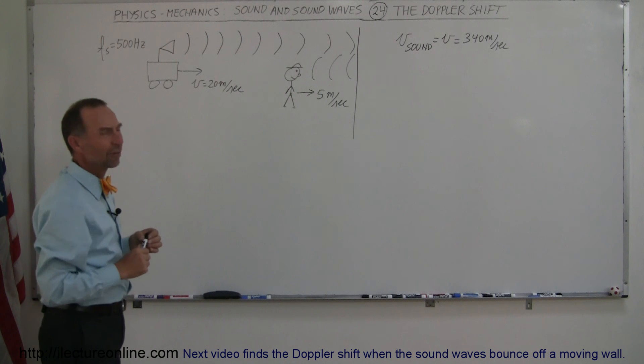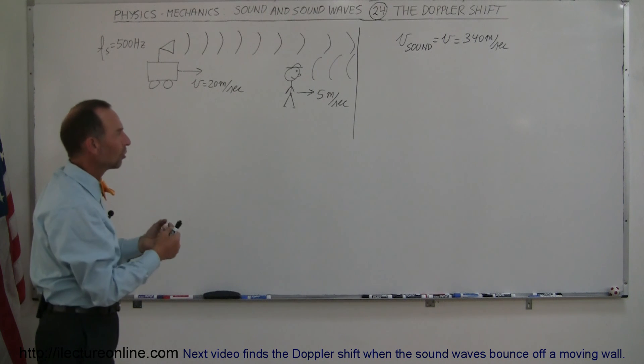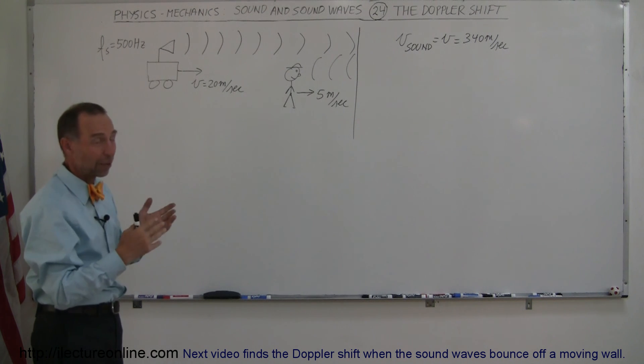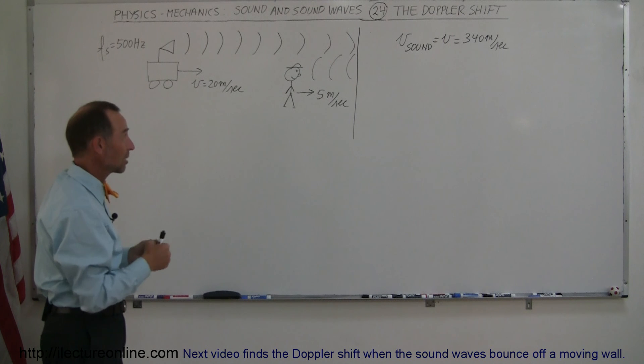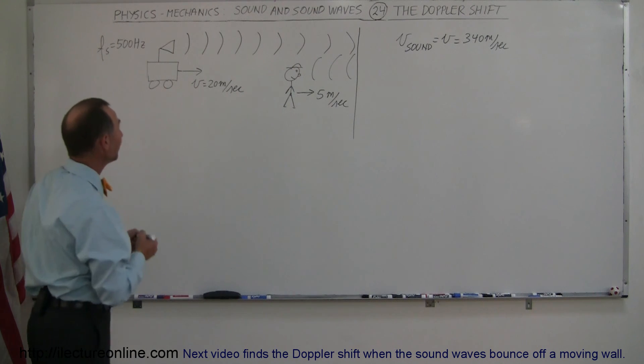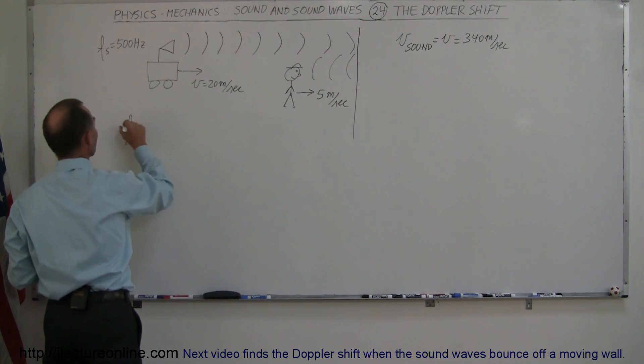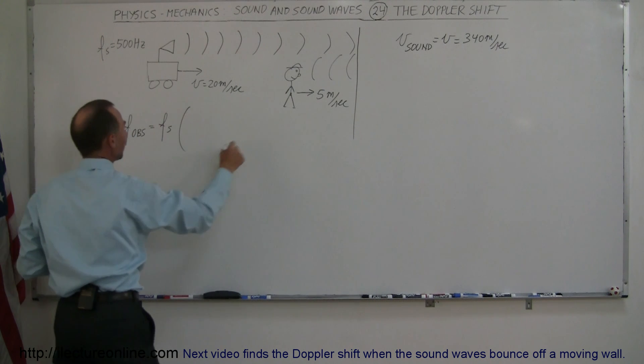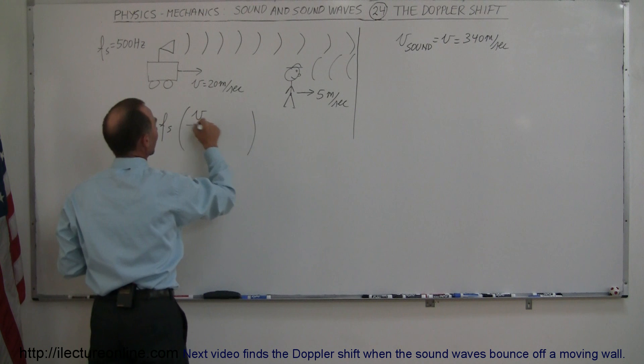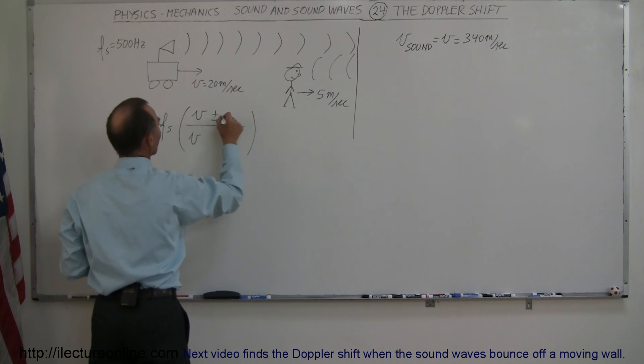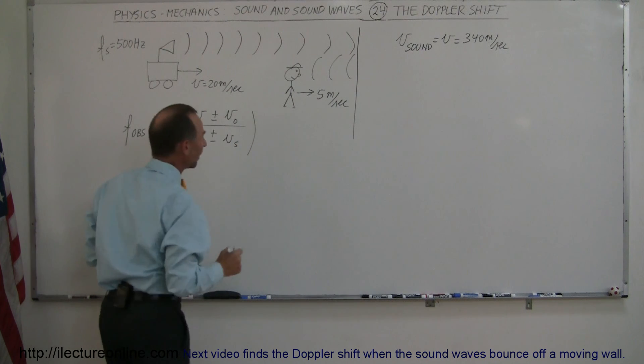So now we need to figure out how to use the equation, the plus and the minus in the equation, to figure out what the actual observer hears, what frequency he hears. Start with the equation that the frequency observed is equal to the frequency of the source times the velocity of sound in air, plus or minus the velocity of the observer, and here plus or minus the velocity of the source in the denominator.